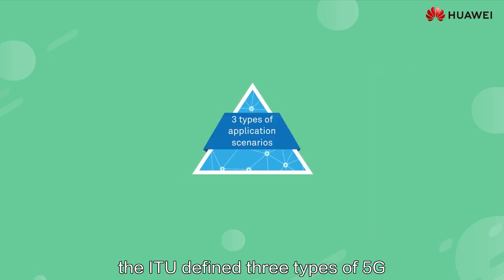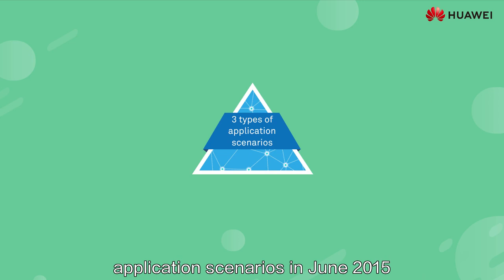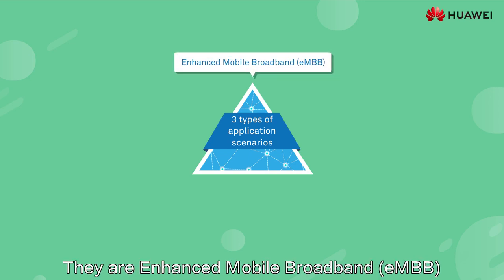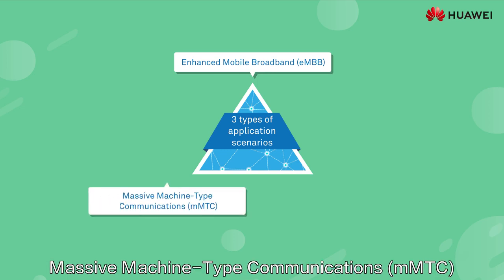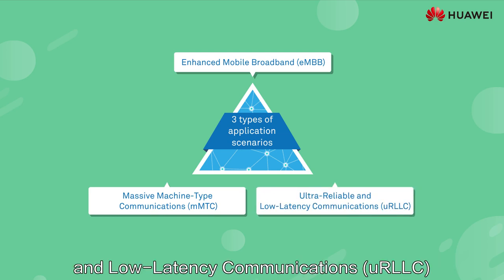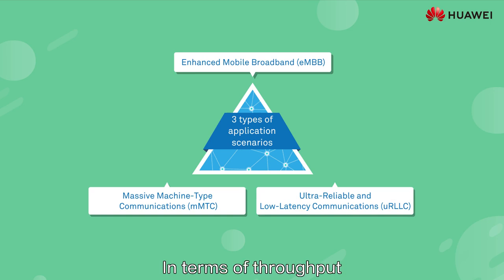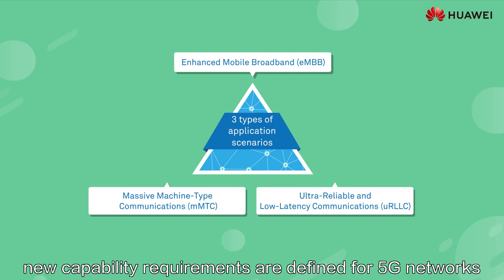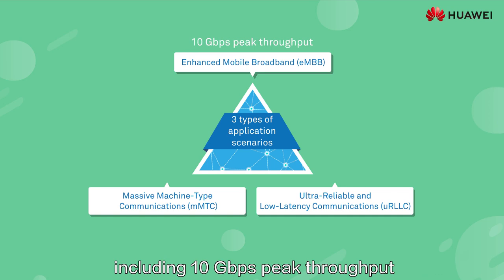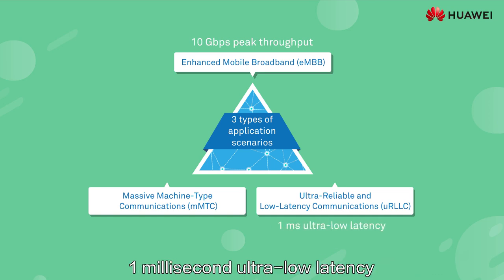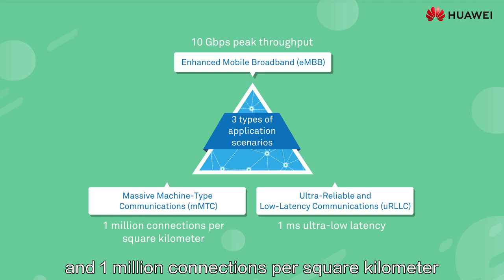In order to achieve the overall vision of 5G and provide the services that cannot be implemented on 4G networks, the ITU defined three types of 5G application scenarios in June 2015. They are enhanced mobile broadband (eMBB), massive machine type communications (mMTC), and ultra-reliable and low-latency communications (URLLC). In terms of throughput, latency, and connection density, new capability requirements are defined for 5G networks, including 10 Gbps peak throughput, 1 ms ultra-low latency, and 1 million connections per square kilometer.